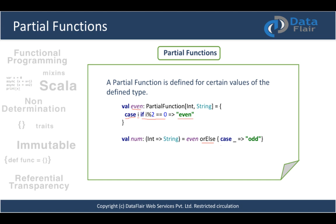While using a partial function you can chain it with 'orElse'. We have a value 'num' as a function literal that takes an integer, calls 'even', and uses 'orElse' with a wildcard case that returns 'odd' for any non-even integer. We can also use 'isDefinedAt' and other helper methods provided by the PartialFunction trait.